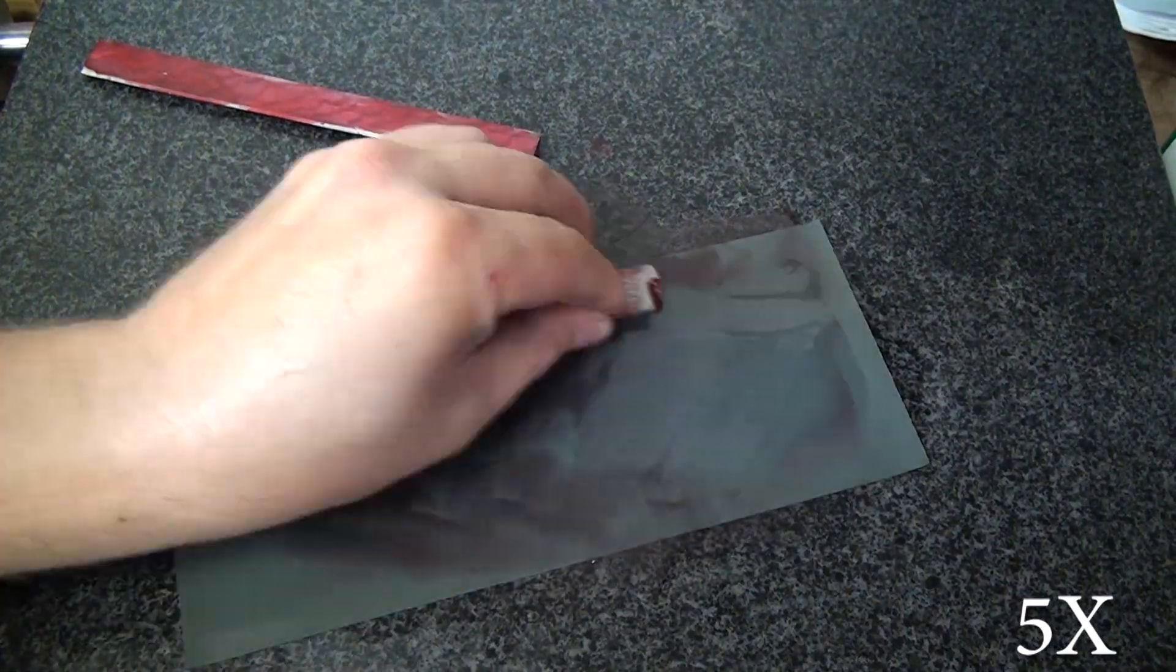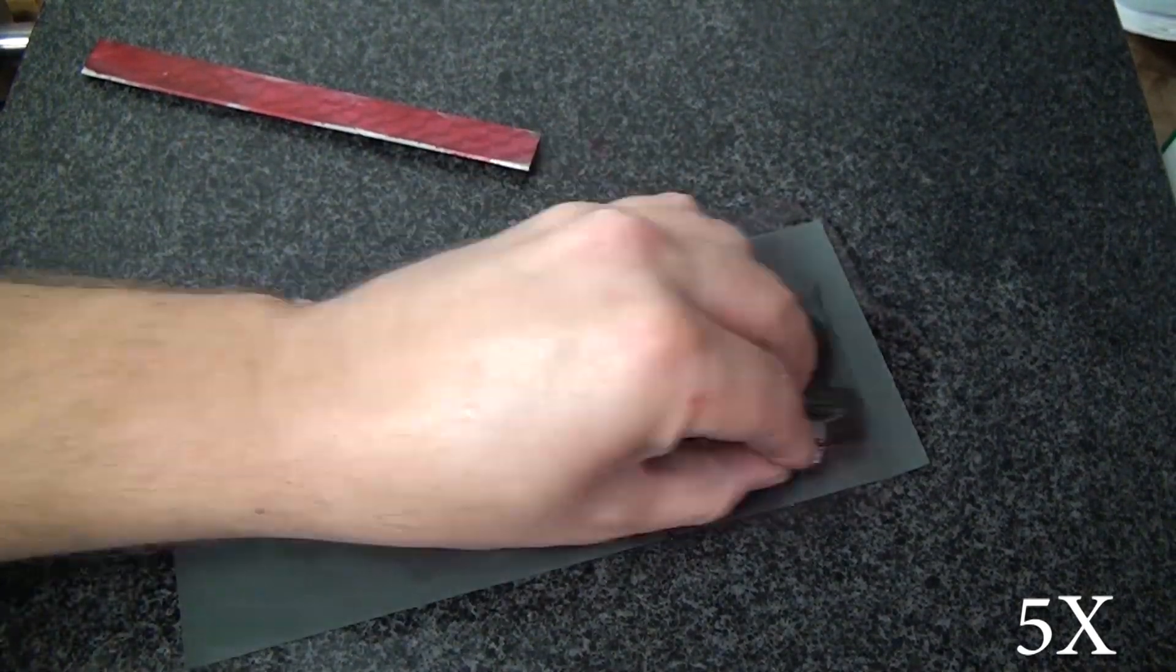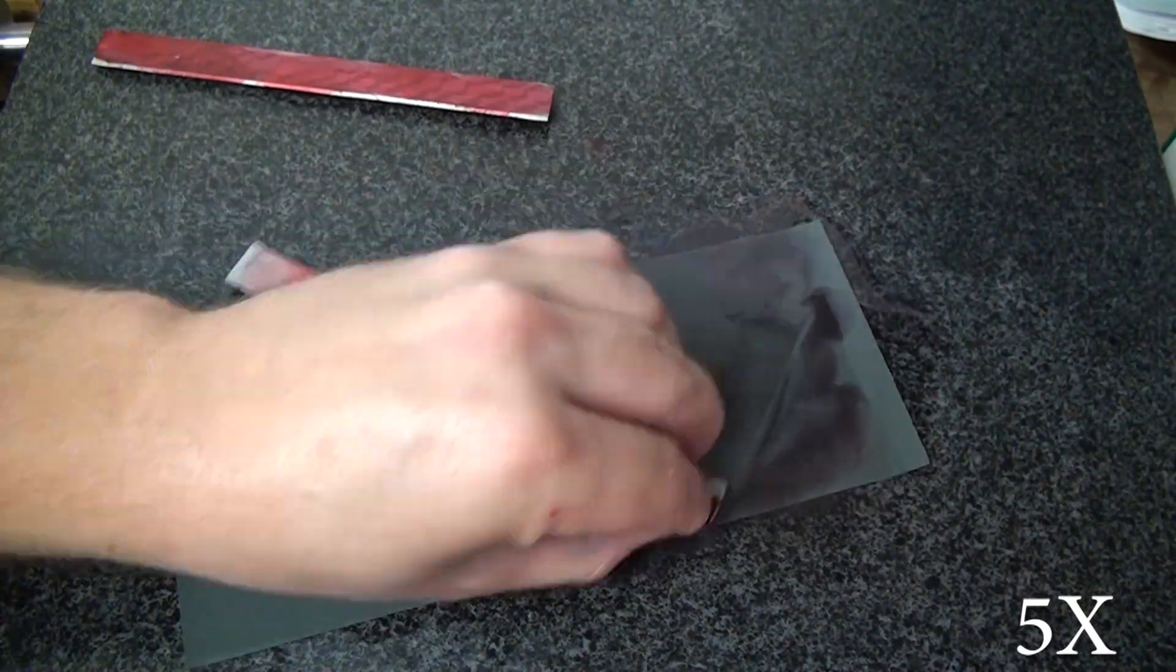So I removed some of the Dykem on the ends, and then when I flip it over, I knocked the Dykem off, and you can see that there's the bulge in the middle of the gibs there.